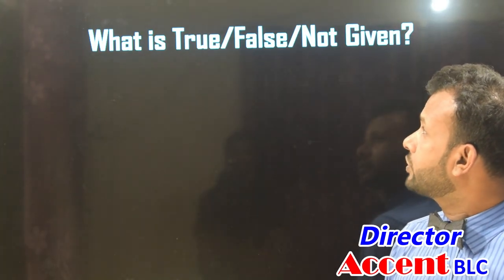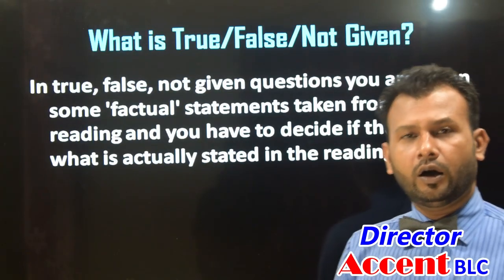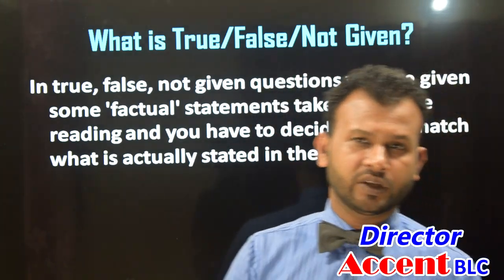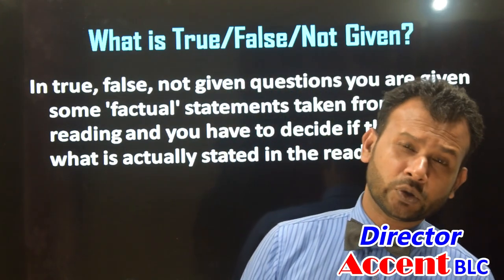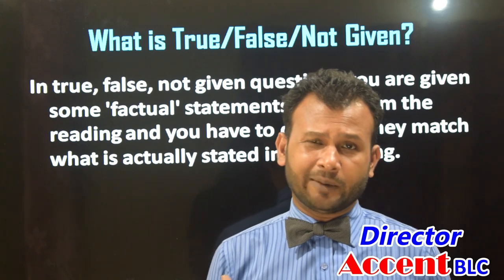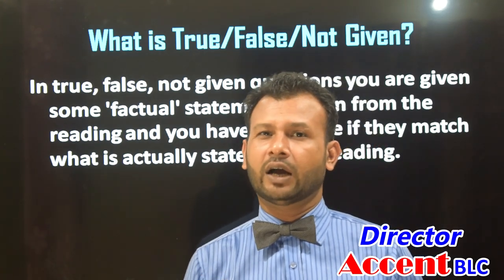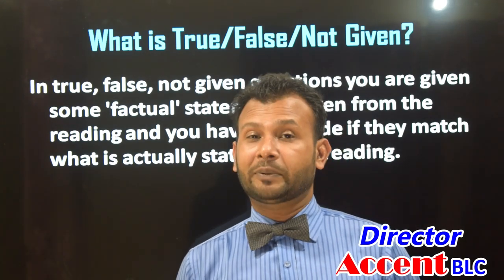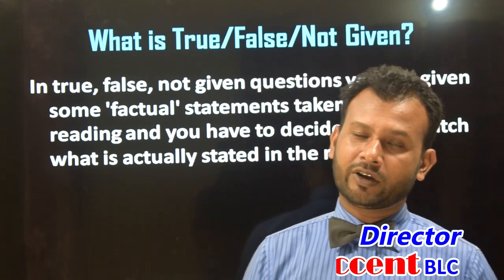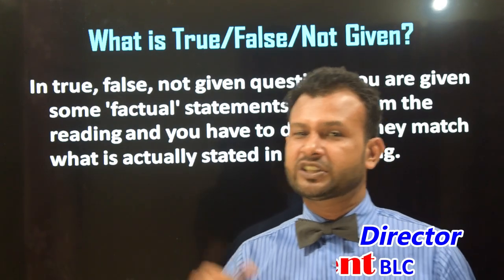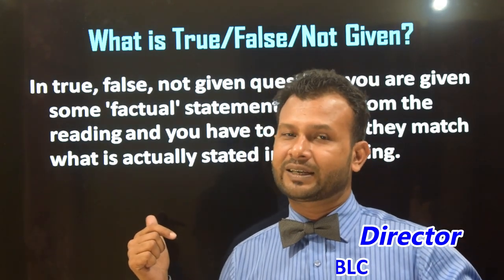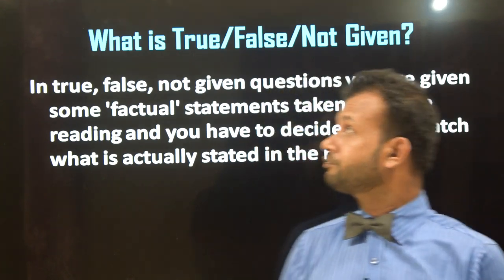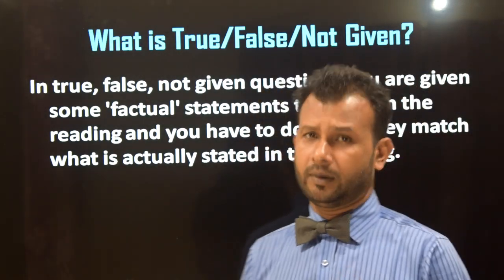True False Not Given is about factual information. It is not imaginary information — it is factual information. This fact is based on a statement that we have to agree with, based on the text. When you agree with the text, then it is True. If you do not agree, then it is False. If the information is not addressed, then it is Not Given.